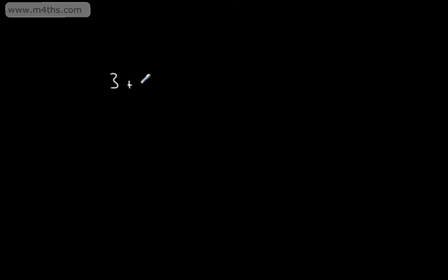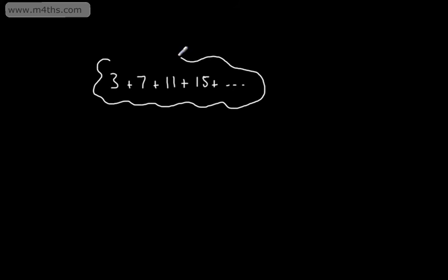Let's write out an arithmetic series. We might, for example, have 3 plus 7 plus 11 plus 15 plus dot dot dot, and so on and so forth. We're summing the terms. We've got a first term, a, which is 3, and a common difference, d, which is going to be 4.